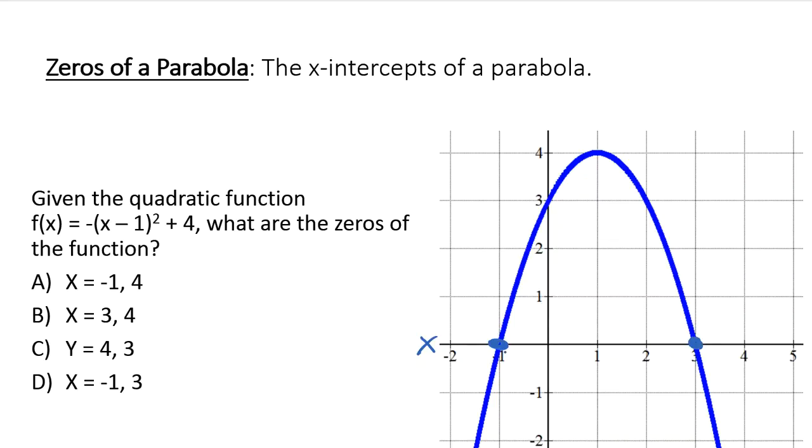We look at it and notice that the graph, the blue line, hits the x-axis at negative 1 and positive 3. So our zeros of the function are negative 1 and 3.